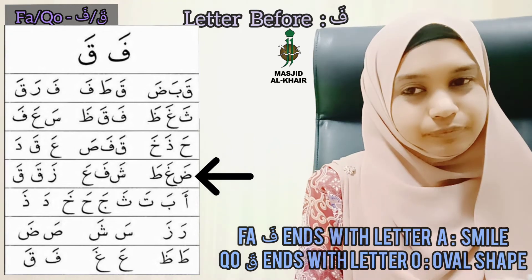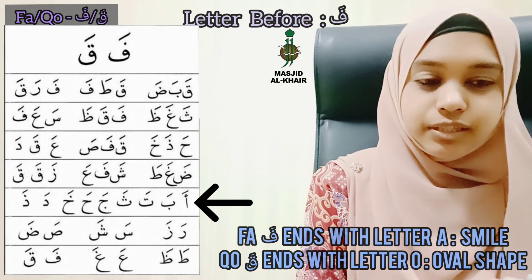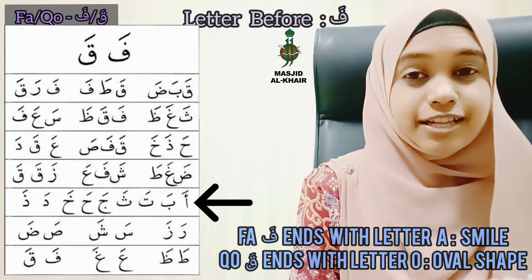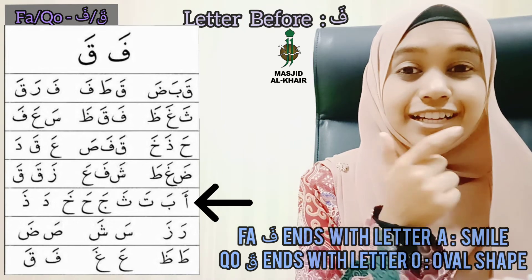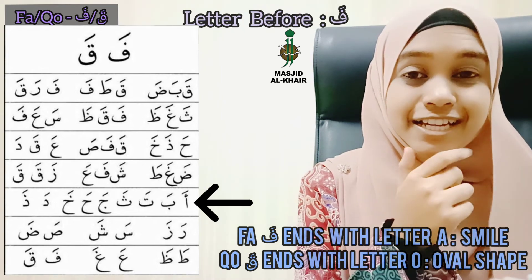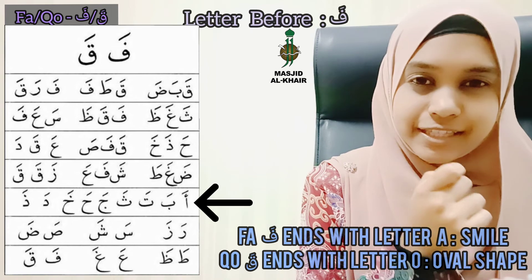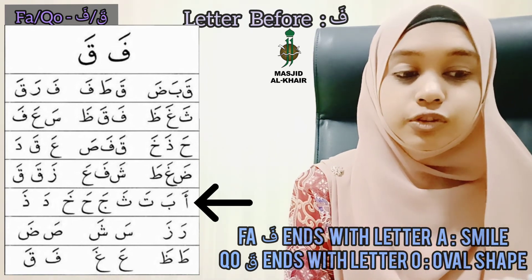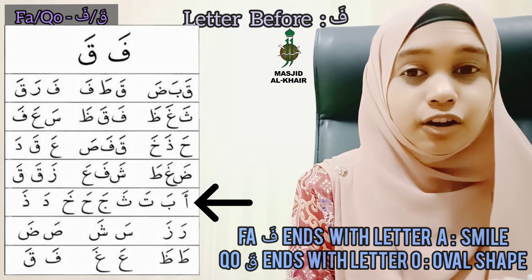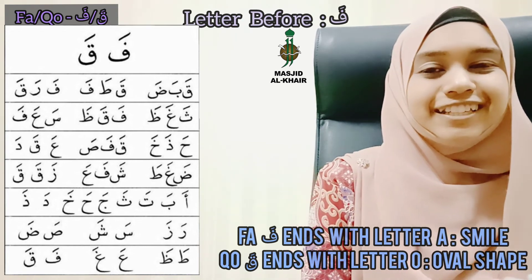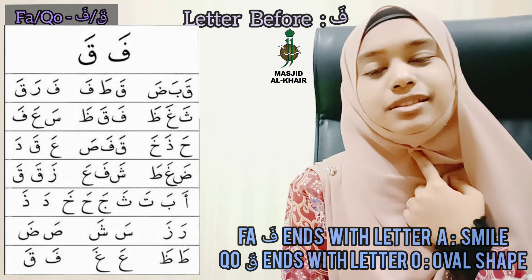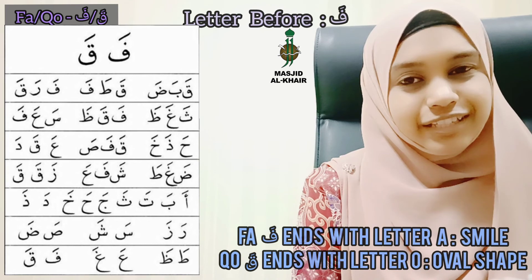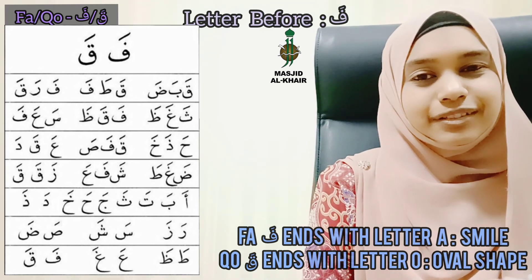Alhamdulillah, very good. Now let's read the last three sentences together: ABAD-THA-THA-JAHA-KHO-DA-THA-RAZA-SASHA-SADA-TA-ZAA-AGHA-FA-QO. QO — so be careful, it's inside the throat. FA — you smile. QO — you oval shift. Assalamualaikum warahmatullahi wabarakatuh.